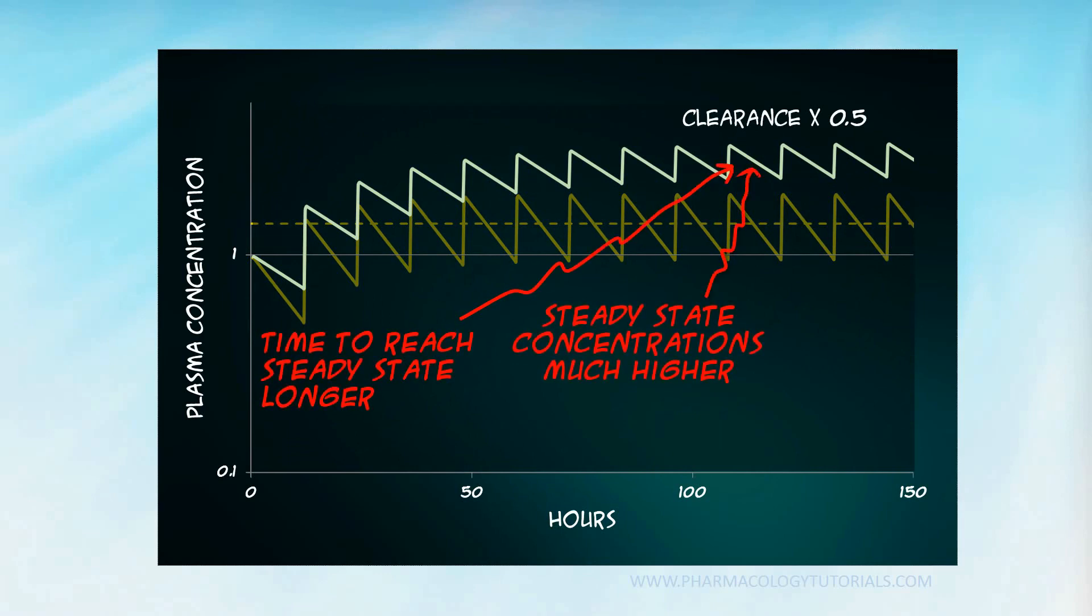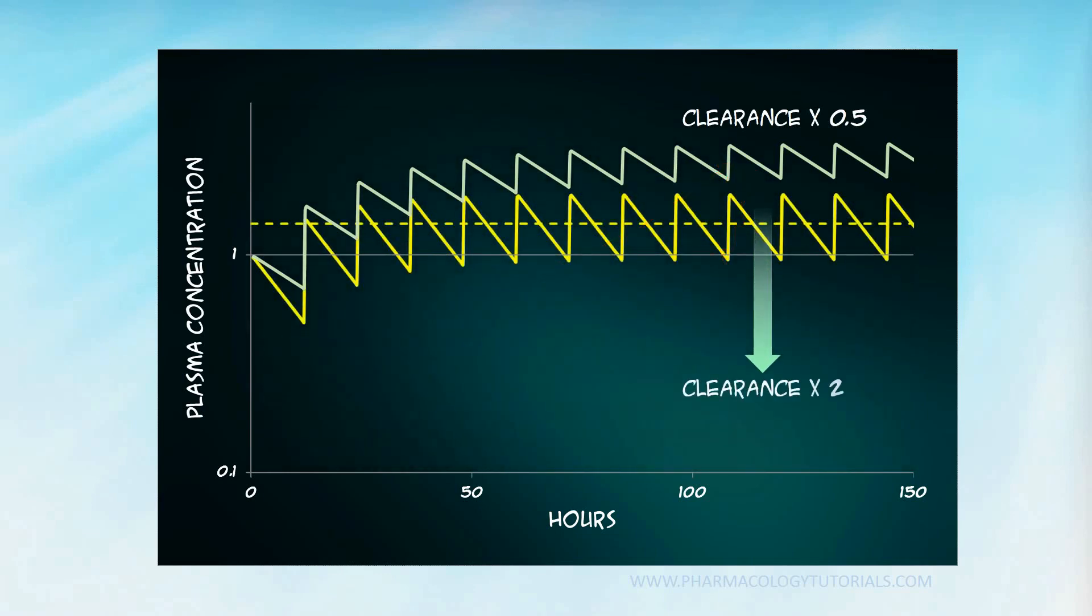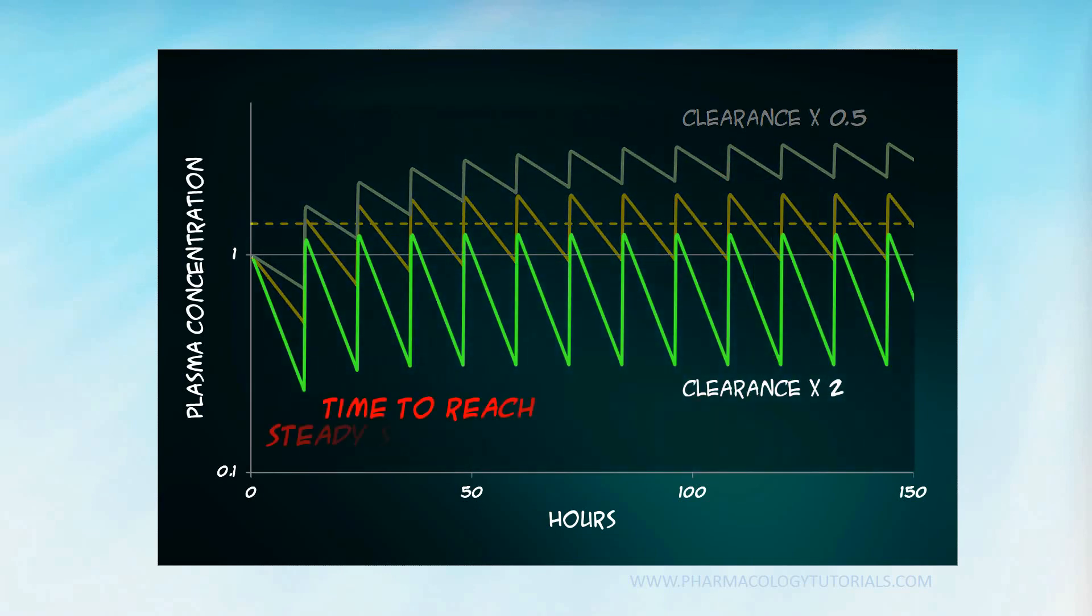Conversely, if you double the clearance, the AUC and steady state concentration decrease. Because the half-life is shortened, the time to reach steady state decreases. But look at the dramatic increase in fluctuations.